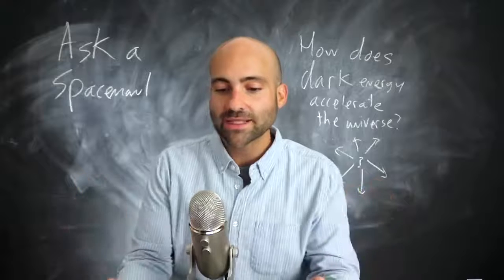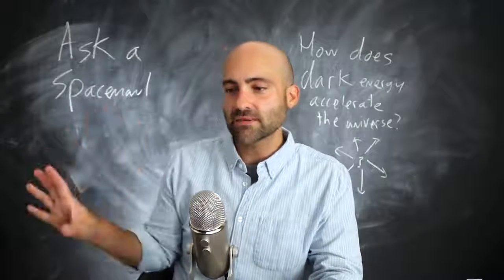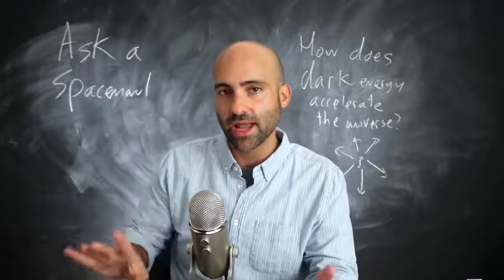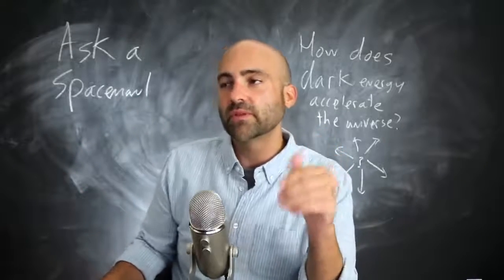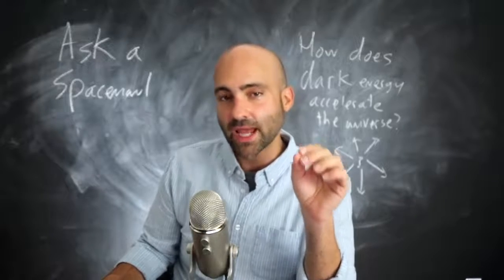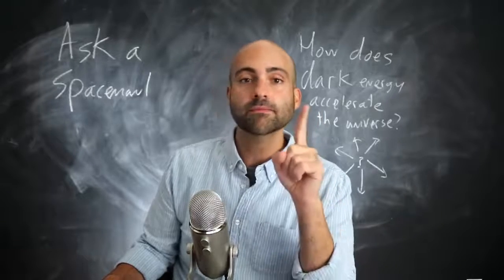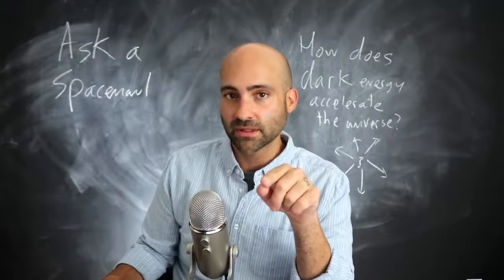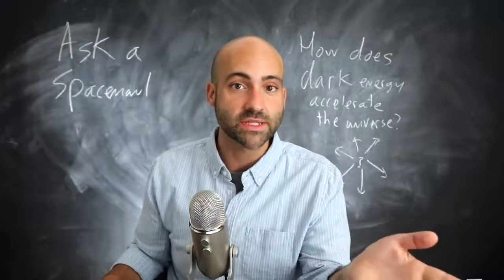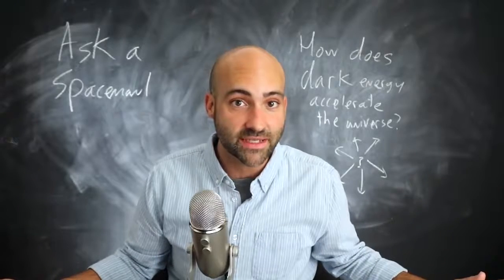I know that's tough and doesn't make a lot of intuitive sense. In the next video I'll dig into more of how that accelerated expansion actually occurs. But for this video, the key point is that the simplest explanation we have for all available evidence is a single number inserted into Einstein's equations of general relativity, able to explain the wealth of cosmological data.